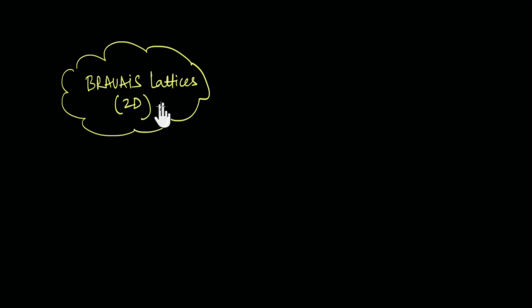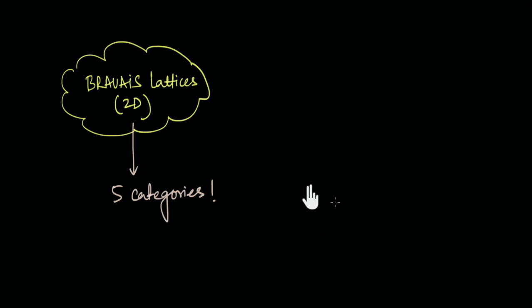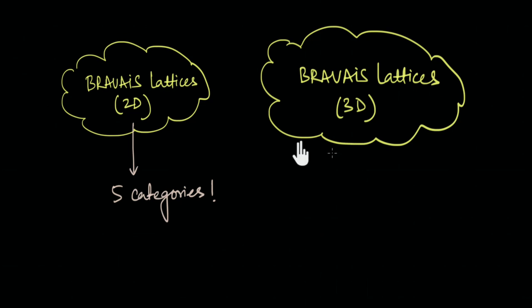In the last video we spent a fair bit of time talking about different Bravais lattices in two dimensions and found out that we could classify these different lattices into five categories based on the kind of unit cell that they have. Now in this video we are going to dive into the more complex three-dimensional Bravais lattices and try to figure out if we can also classify these lattices into some categories, just like we did with the two-dimensional ones.